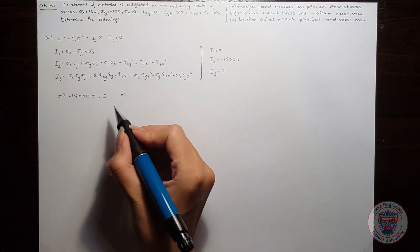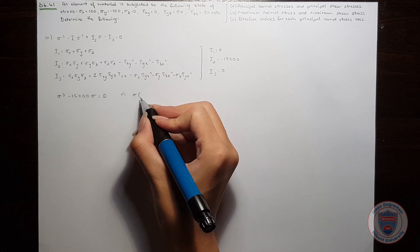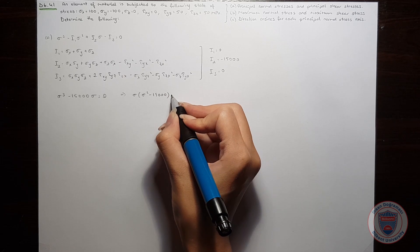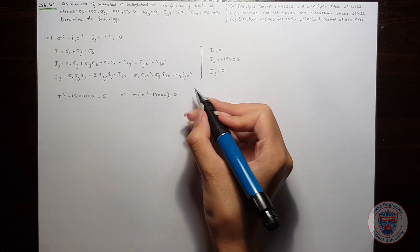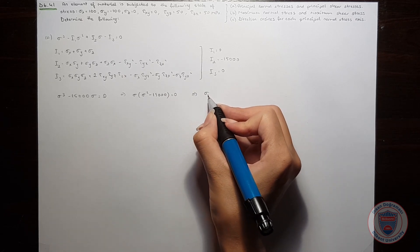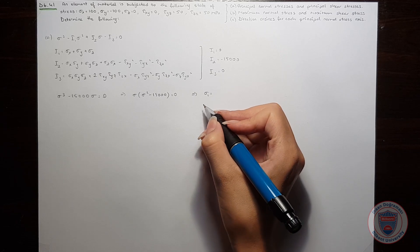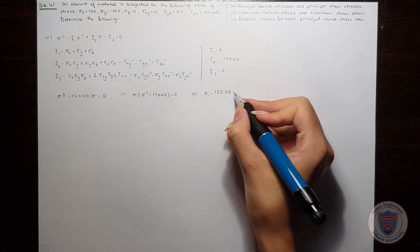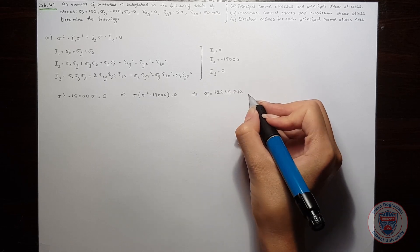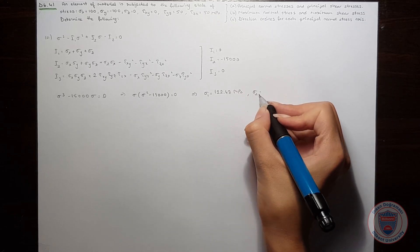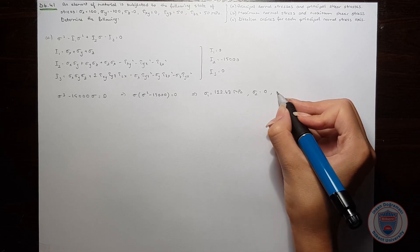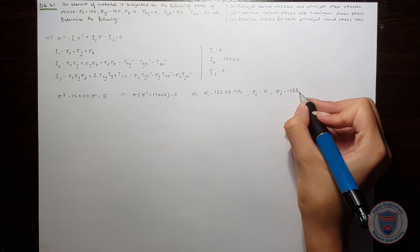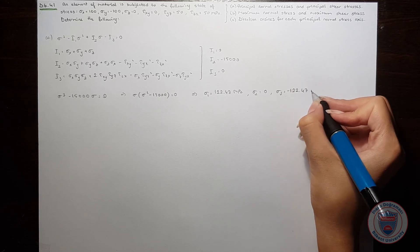We can write this equation as sigma times (sigma squared minus 15,000) equals zero. The roots are sigma_1 equal to 122.47 MPa, sigma_2 equal to 0, and sigma_3 equal to minus 122.47 MPa.